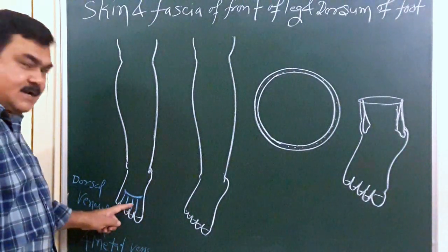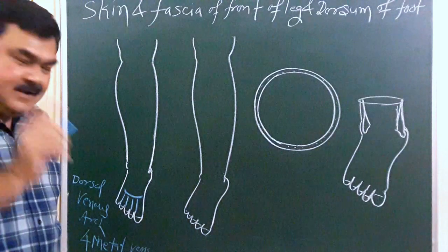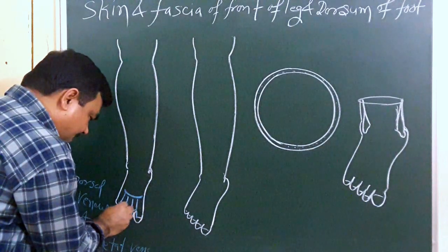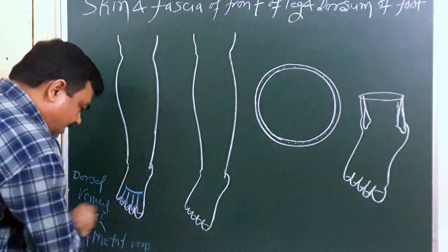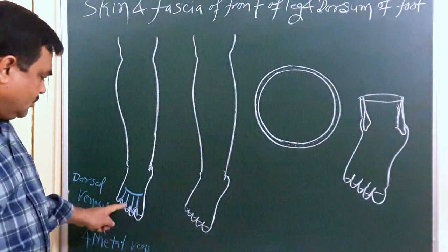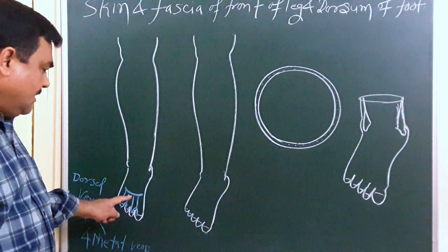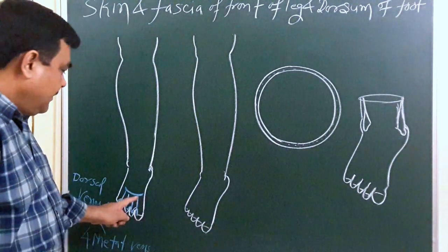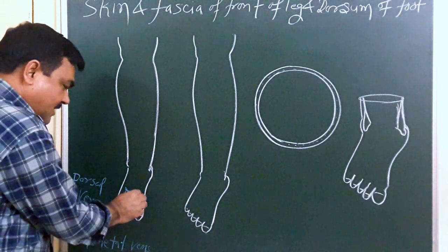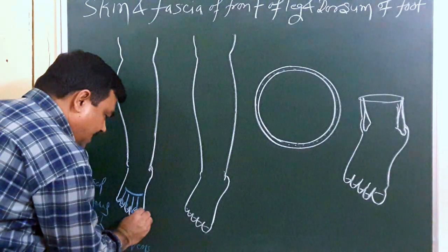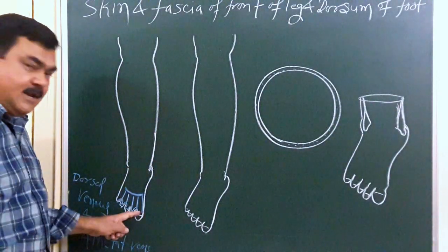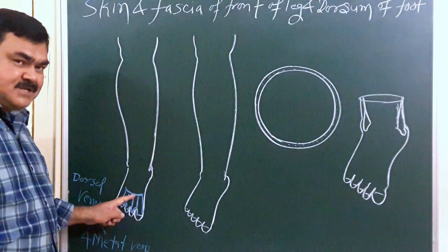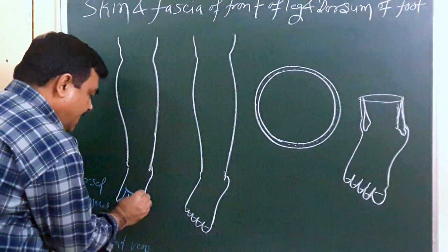These are four metatarsal veins, and each metatarsal vein receives two dorsal digital veins. So these veins drain into the dorsal venous arch. On the medial side, this dorsal venous arch joins with the medial marginal vein. This is the medial marginal vein, and it joins with the medial end of the dorsal venous arch to form the great saphenous vein.